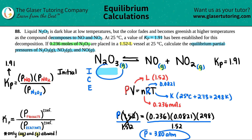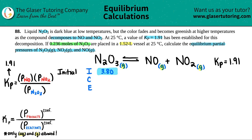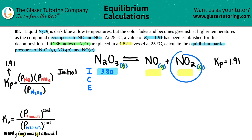So 3.80 is placed in the initial row for N2O3 — the only unit for pressure in an ICE chart is ATM. For the initial values of NO and NO2: when they described what happened at the beginning, they only placed N2O3 into the vessel. They placed no NO and no NO2. So those initials are zero and zero.